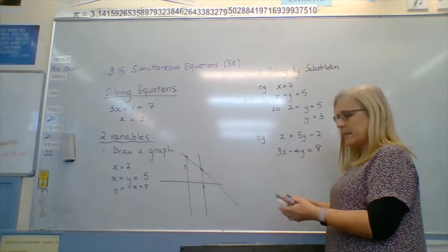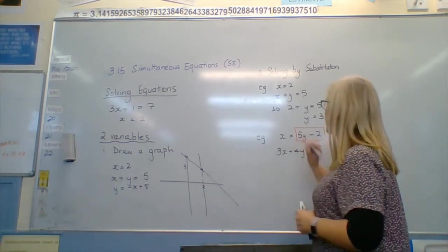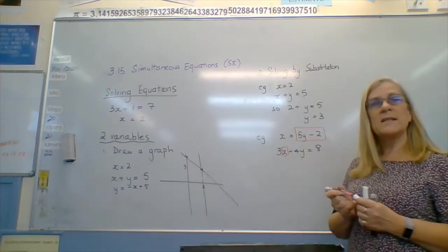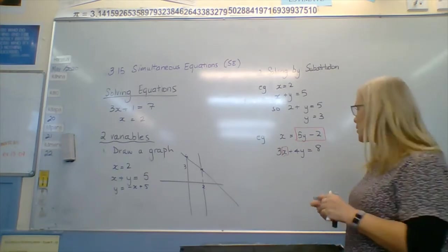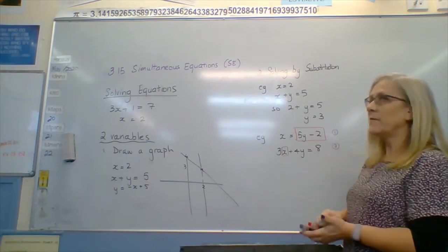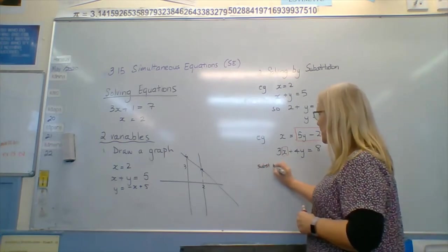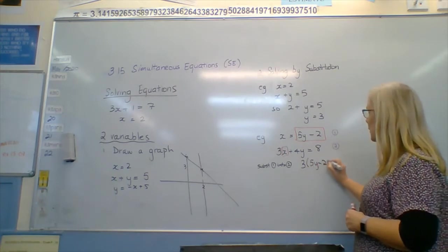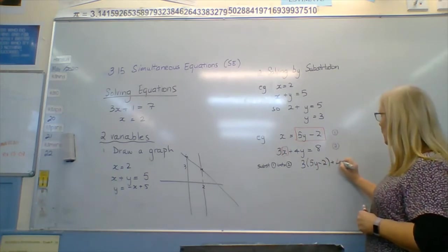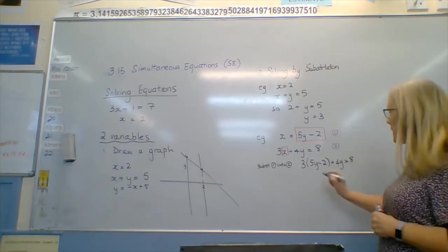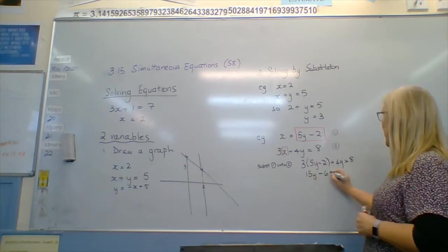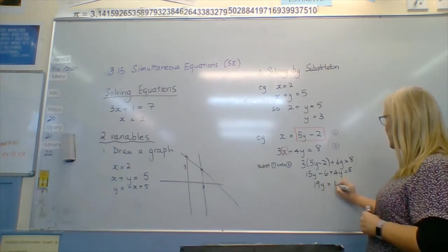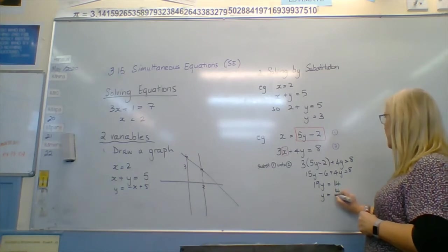What I'm going to do is, this says this is what x equals. In these two equations, this is x as well. So therefore, that is the same as that. So we can substitute. We call this 1, we call this 2. We substitute the one that says something equals into 2. So we get 3 bracket 5y minus 2 bracket plus 4y equals 8. And we solve that for y. We've got 15y minus 6 plus 4y equals 8. We've got 19y equals 14, y equals a lovely number of 14 over 19.